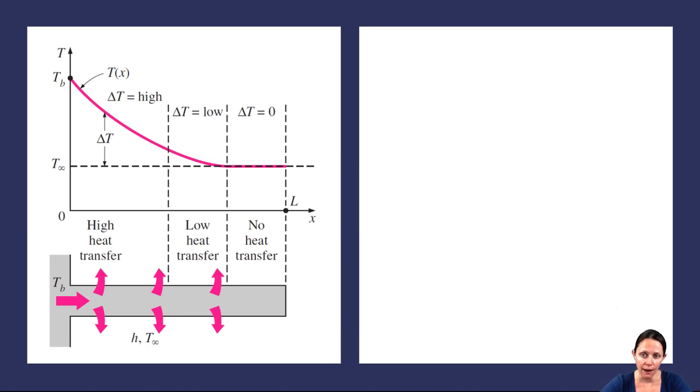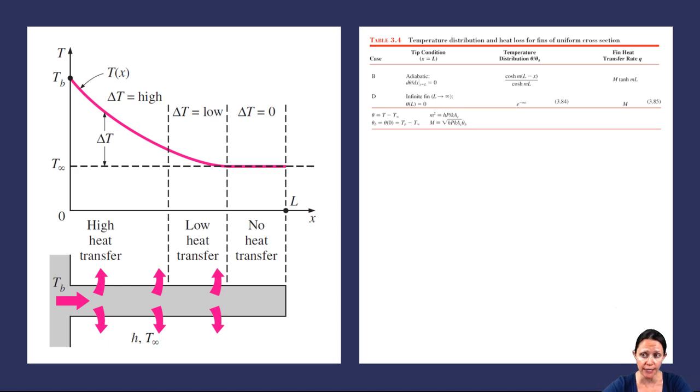So to get an idea of how long the fin should be, we'll compare the heat transfer rate from case B to case D. So why case B? Well, because in both of these cases there's negligible heat transfer from the tip. In case D, that's because the fin is long enough so that the tip temperature is the same as the fluid. In case B, we just have negligible heat transfer because the tip is close to long enough or maybe it's long enough such that the temperature difference between the fin tip and the fluid is negligible.